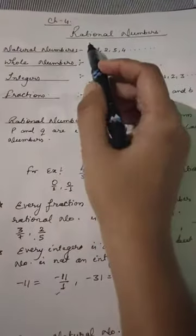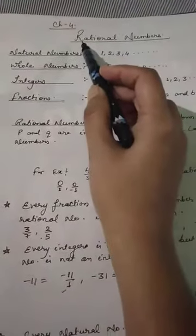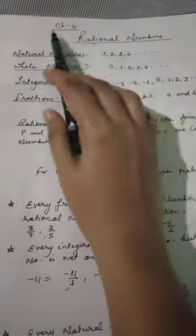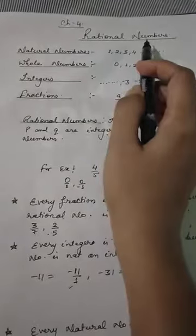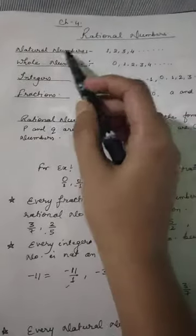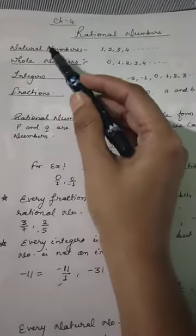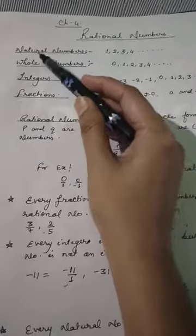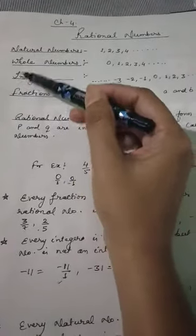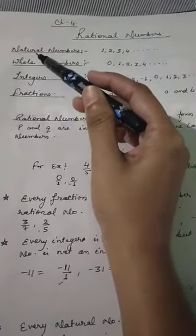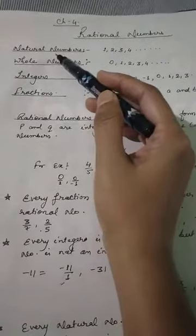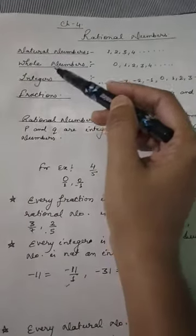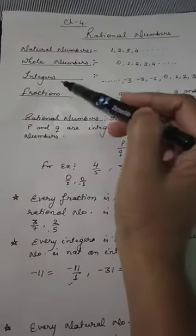Today we will start Chapter 4: Rational Numbers. But before that, let's recall what we have already studied about natural numbers, whole numbers, integers, and fractions.